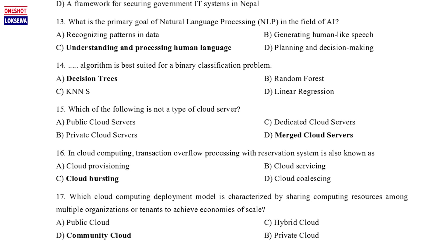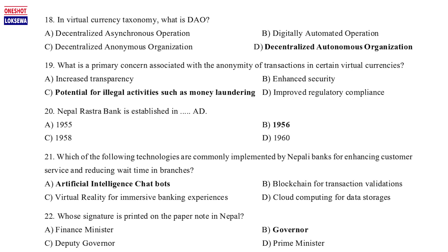Question 17: Which cloud computing deployment model is characterized by sharing computing resources among multiple organizations or tenants to achieve economies of scale? a. Public cloud, b. Private cloud, c. Hybrid cloud, d. Community cloud. Question 18: In virtual currency taxonomy, what is DAO? a. Decentralized asynchronous operation, b. Digitally automated operation, c. Decentralized anonymous organization, d. Decentralized autonomous organization.